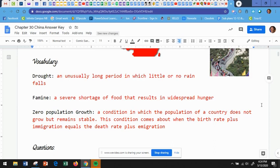And the next vocabulary word is zero population growth. It's a condition in which the population of a country does not grow, but remains stable. This condition comes about when the birth rate plus immigration equals the death rate plus emigration.